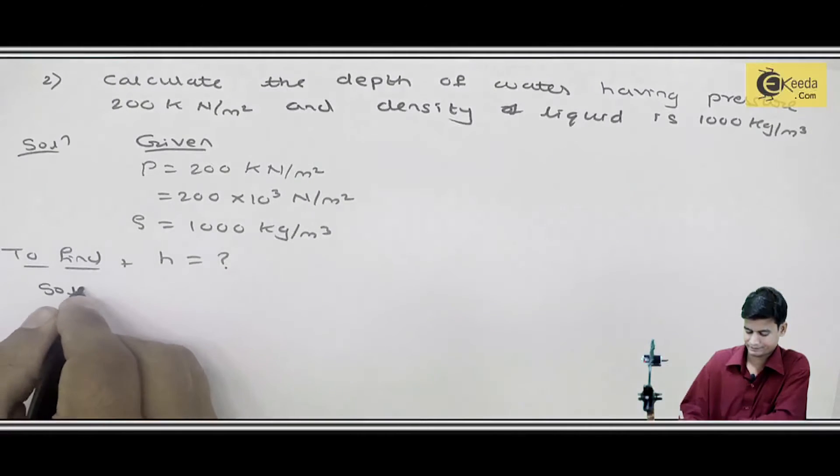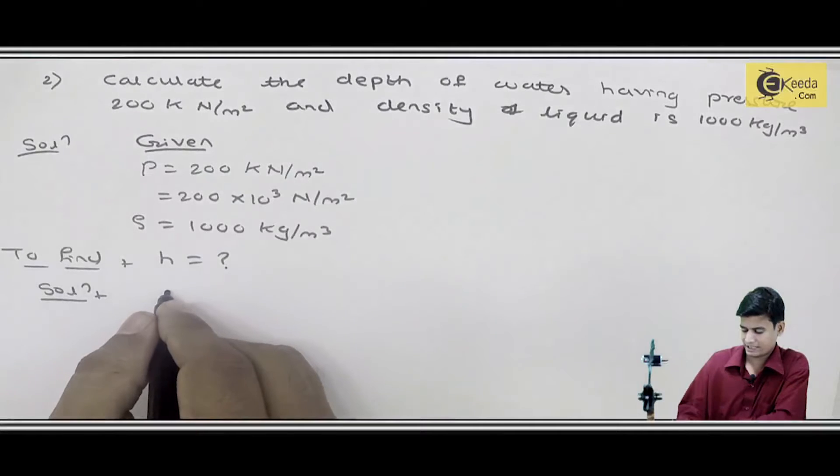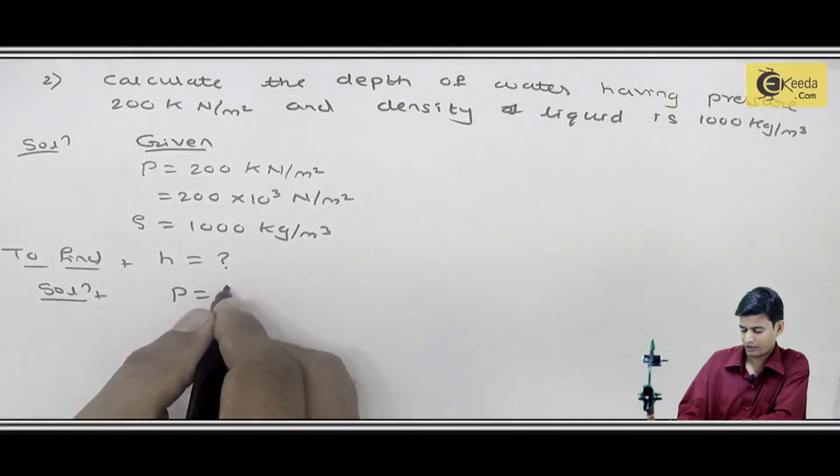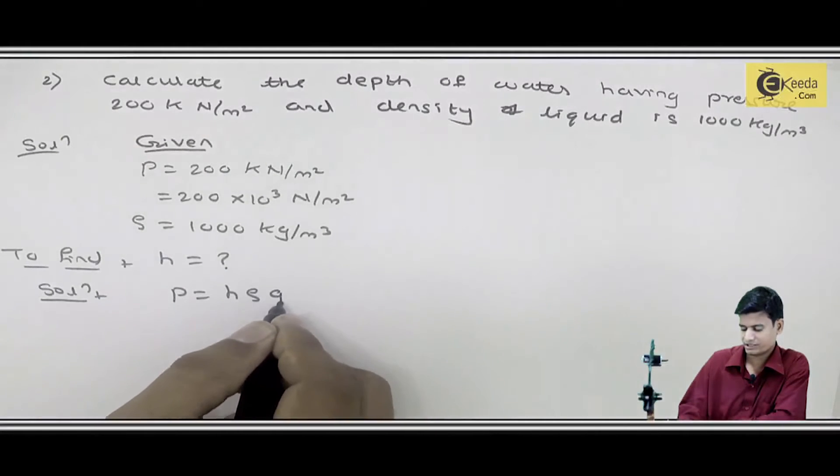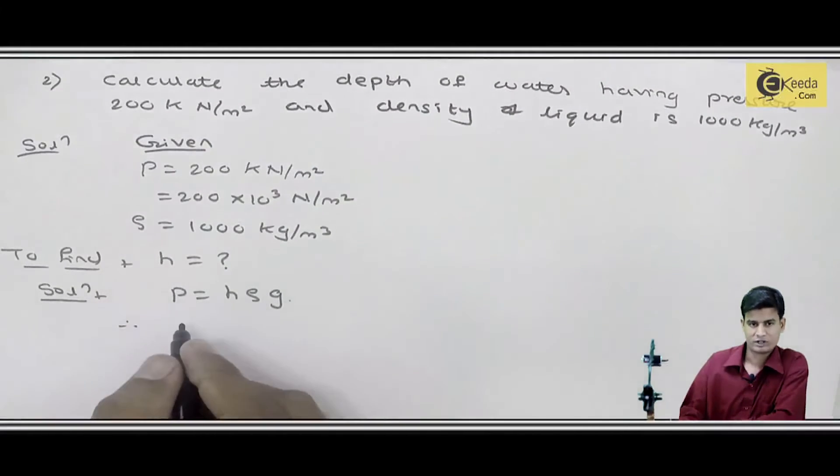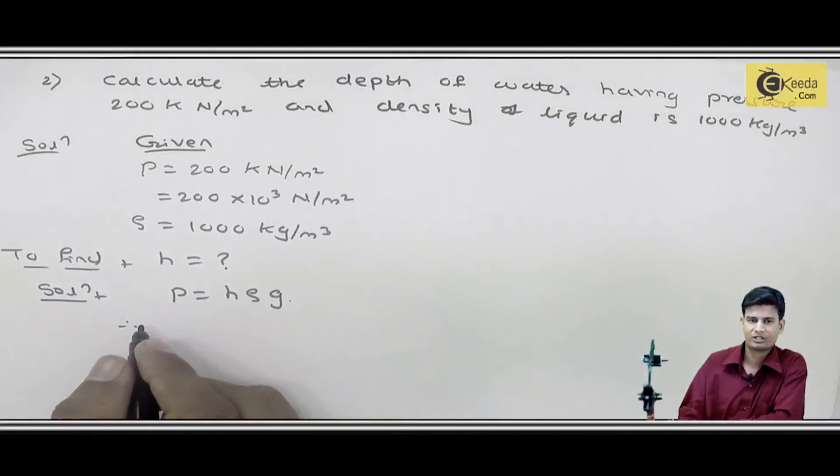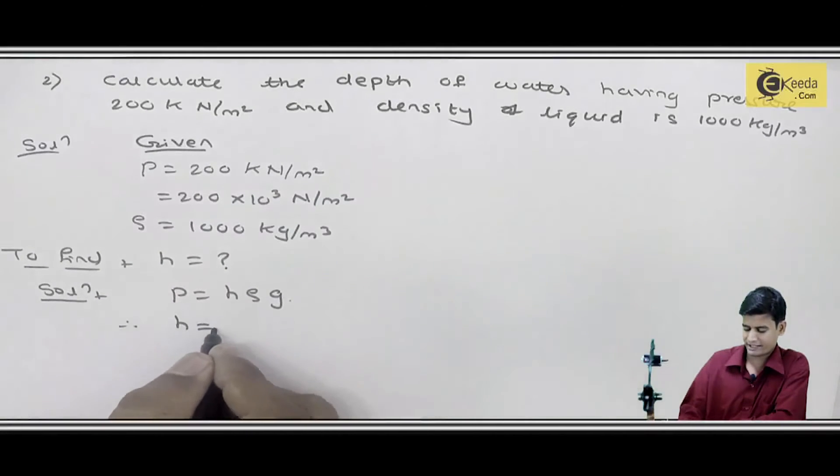Solution: Using the formula P = h×ρ×g, I will rearrange it to solve for h because we need to find height or depth of water. So h = P/(ρ×g).